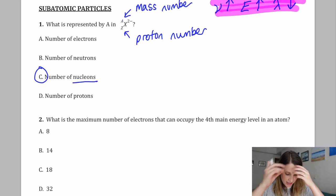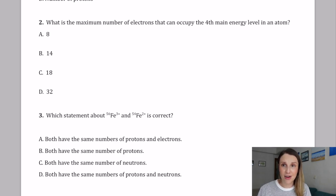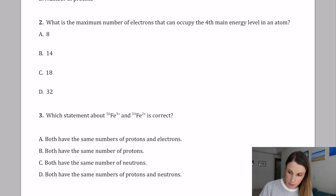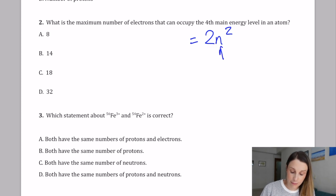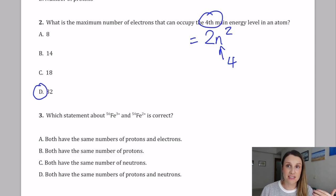The second question asks for the maximum number of electrons that can occupy the fourth main energy level in an atom. The number of electrons that can fit in an energy level equals 2n², where n is the energy level number. In this case n = 4 because it's the fourth main energy level, so 2n² becomes 32. In the fourth energy level we're expecting 32 electrons in total.